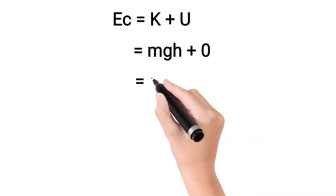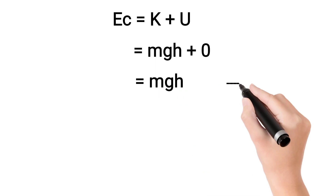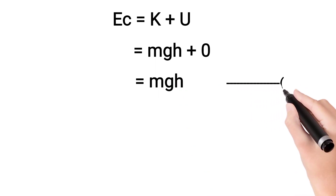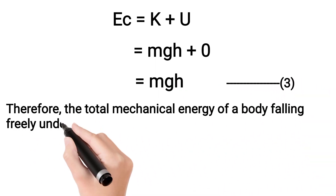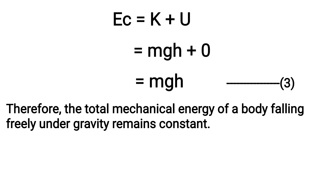So total energy at C: EC is equals to sum of kinetic energy and potential energy. On putting the values, we get EC is equals to MGH. From equations 1, 2, and 3, it is clear that the total mechanical energy of a body falling freely under gravity remains constant.